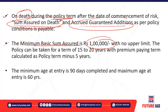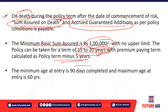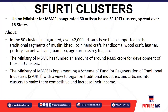The policy term for Bima Jyoti is 15 to 20 years. The premium payment term is calculated as the policy term minus five years — so for a 15-year term you pay premium for 10 years, and for a 20-year term you pay for 15 years. The minimum age at entry is 90 days completed and the maximum age at entry is 60 years.